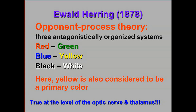And according to opponent process theory, there are four primary colors: red, green, blue, and yellow. I'm going to show you some evidence for opponent process theory in a moment that you can actually see with your own eyes. But here's what we know about opponent process theory today. When we look at neurons in the optic nerve and in the thalamus, they do indeed behave in this fashion.